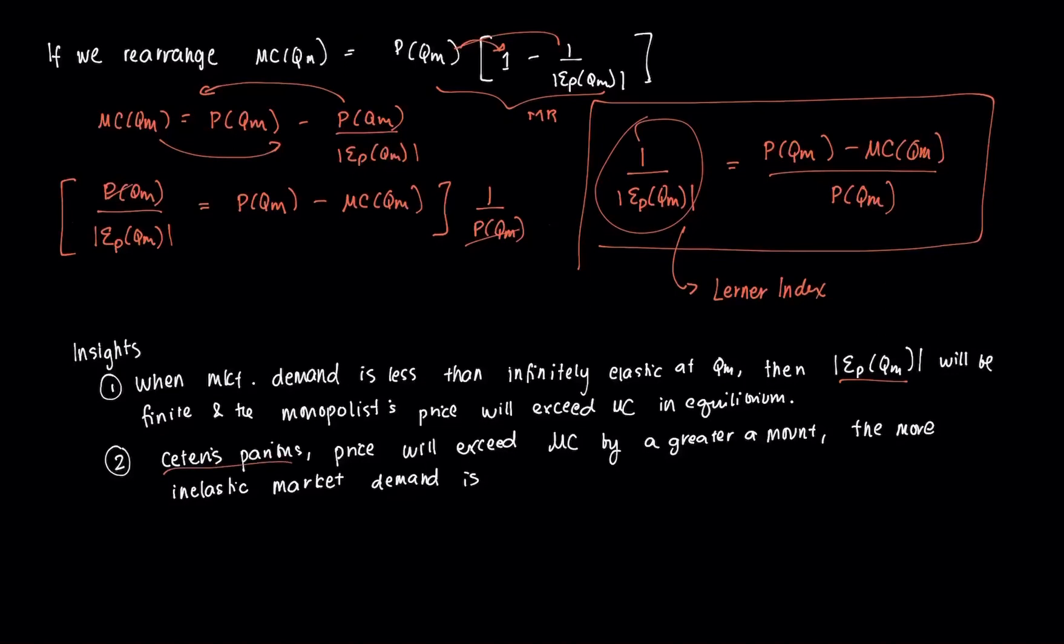So these are a few insights on a monopolist's output choice and the elasticity of price that it would experience. In the next video we're going to tackle more about the concept of the Lerner index which we introduced here. So thank you for your attention.